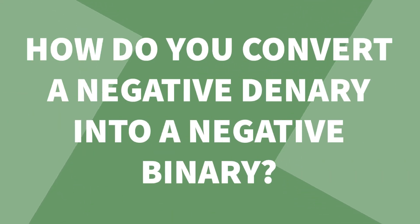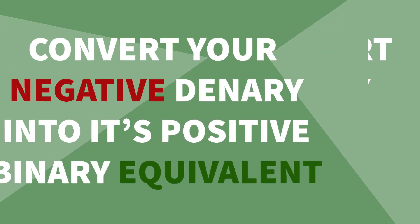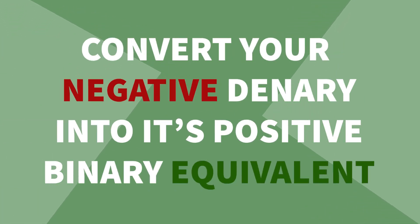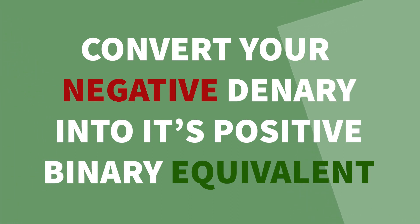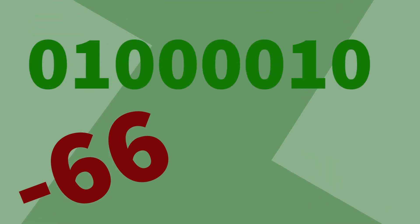But how do you convert a negative denary into a negative binary? Start by converting the negative denary into its positive binary equivalent. So for minus 66, we need to create 66 in binary, which looks like this: 01000010.